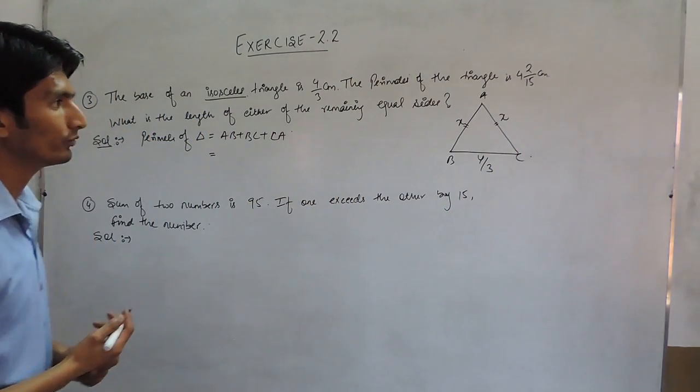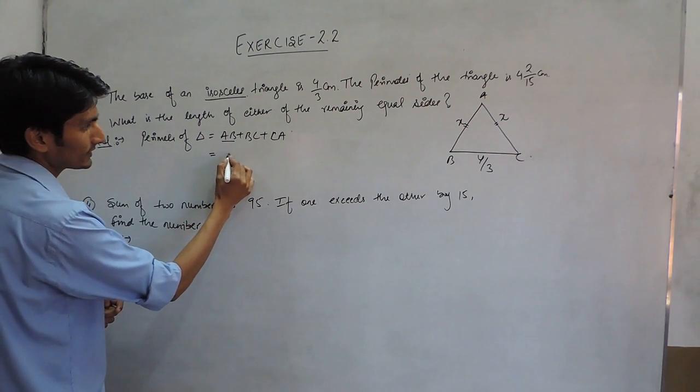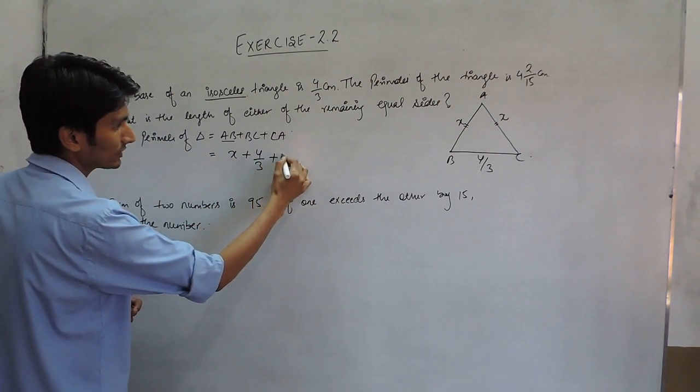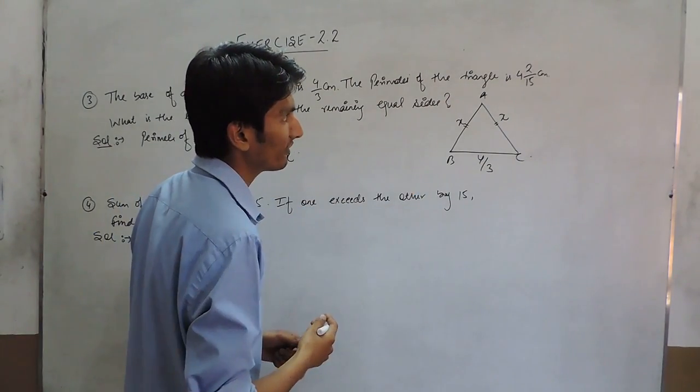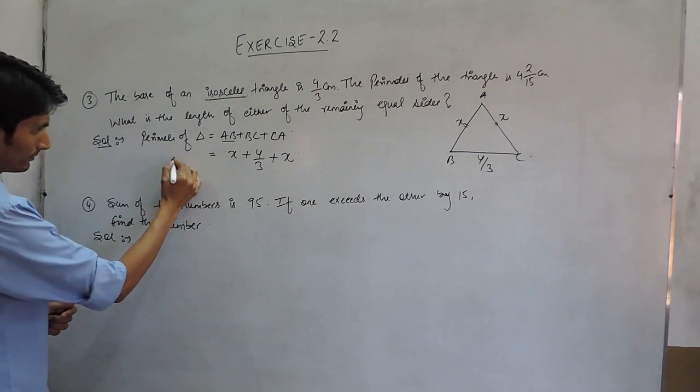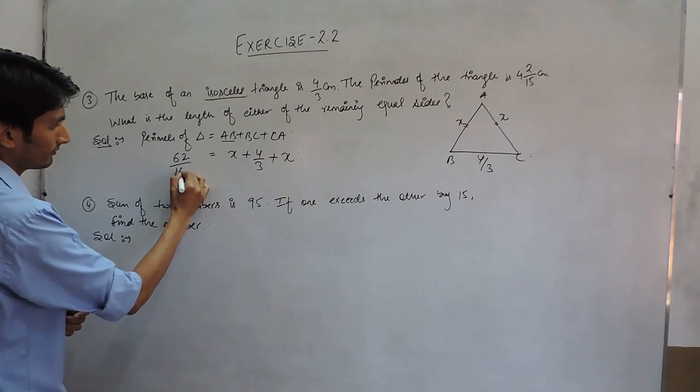Suppose the value which we have to find is X, so this AB is X, BC is 4/3 and CA is also X. And the perimeter is given as 4 2/15. When that fraction is calculated, it would become 62/15.